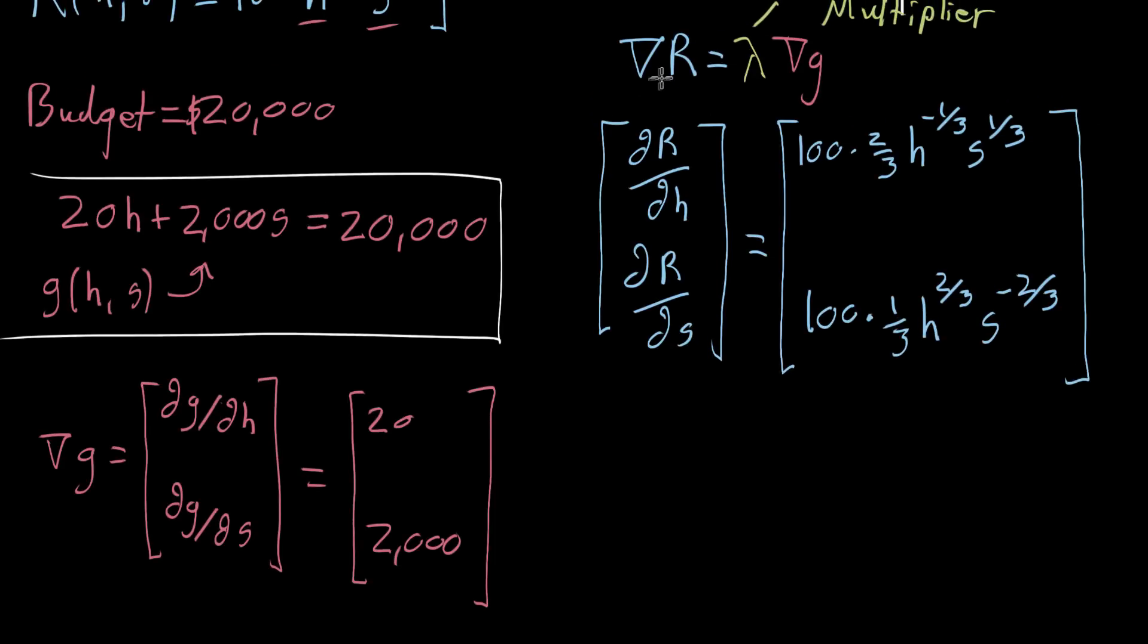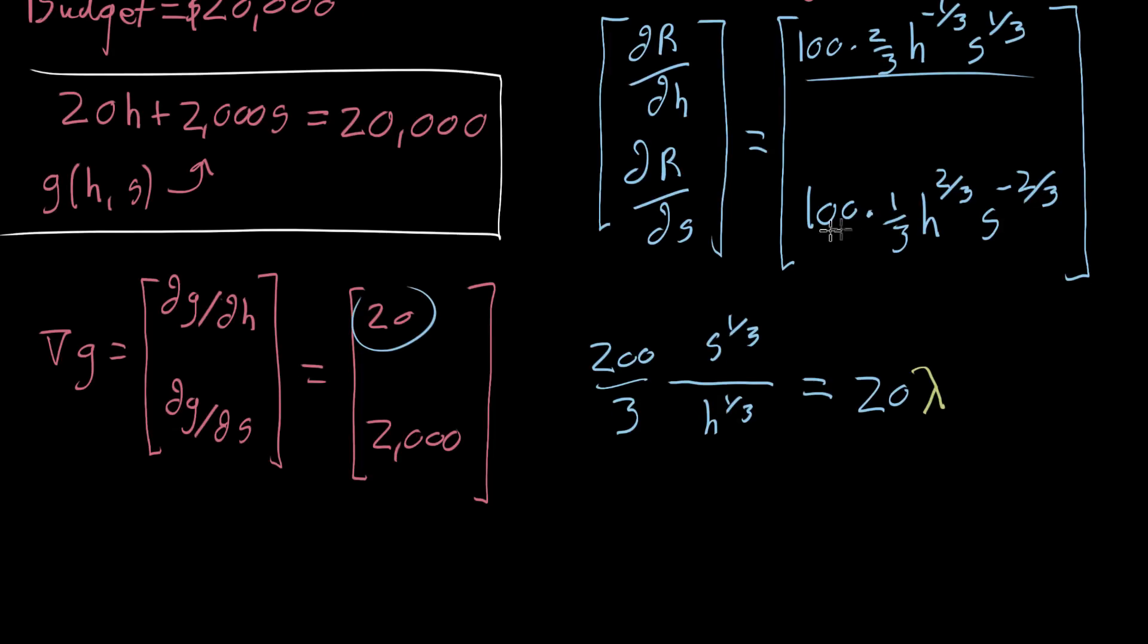And this means when we set the gradient of r equal to the gradient of g, the pair of equations that we get, and let me just write it all out again, is we have this top one, which I'll call 200 thirds times, and let's go ahead and do a little simplifying while I'm rewriting things here. So h to the 1 third is really 1 over h to the negative, 1 third sorry, is 1 over h to the 1 third. And that's s to the 1 third. So all of this, that first component, is being set equal to the first component of the gradient of g, which is 20, times lambda, times this Lagrange multiplier. Because we're not setting the gradients equal to each other, we're just setting them proportional to each other. So that's the first equation.